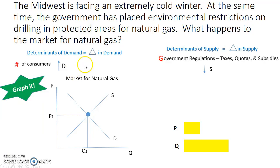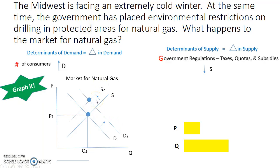The first thing I need to do is add in the increase in demand because they're facing an extremely cold winter. At the same time, the government is restricting drilling, so that decreases supply. In order to figure out the new equilibrium, since these happened at the same time, I look at the new D2-S2 intersection. That gives the new equilibrium price and quantity. What I can see is that price has gone up and quantity has not changed much — in this graph it looks like it has increased slightly.